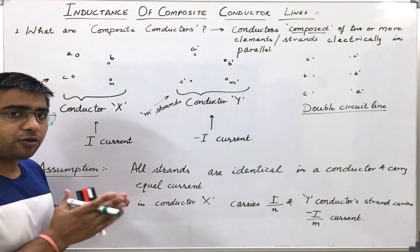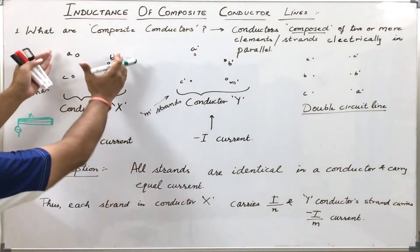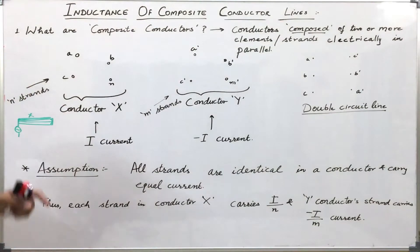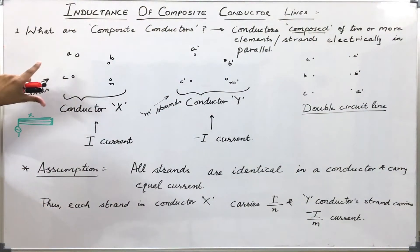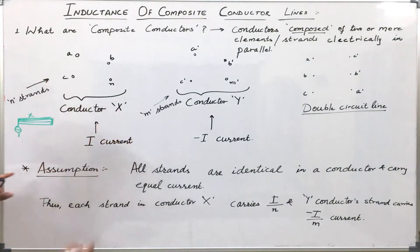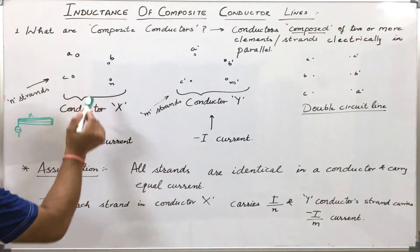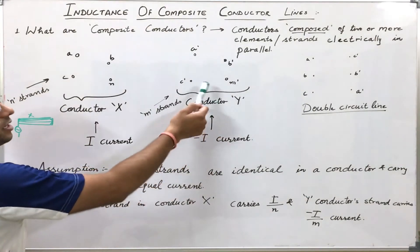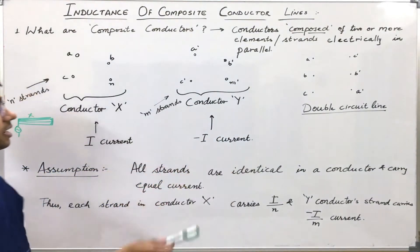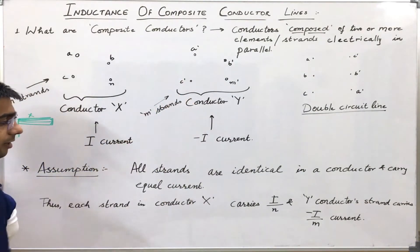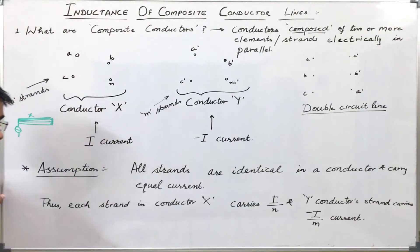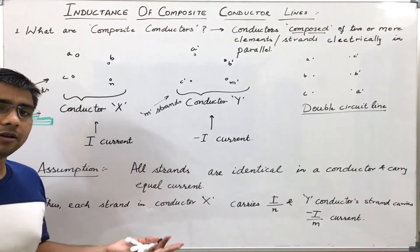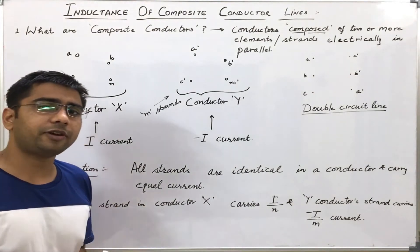So before going to the derivation part, we will see what are the assumptions we are going to take. The assumption is that the strands of a conductor — let us say these N strands of conductor X — are identical to each other. That is, they are going to carry the same current. If the conductor X is carrying total current I, then each strand will carry current I by N. Similarly, if conductor Y is the return conductor carrying current minus I, then every strand of conductor Y will carry current minus I by M.